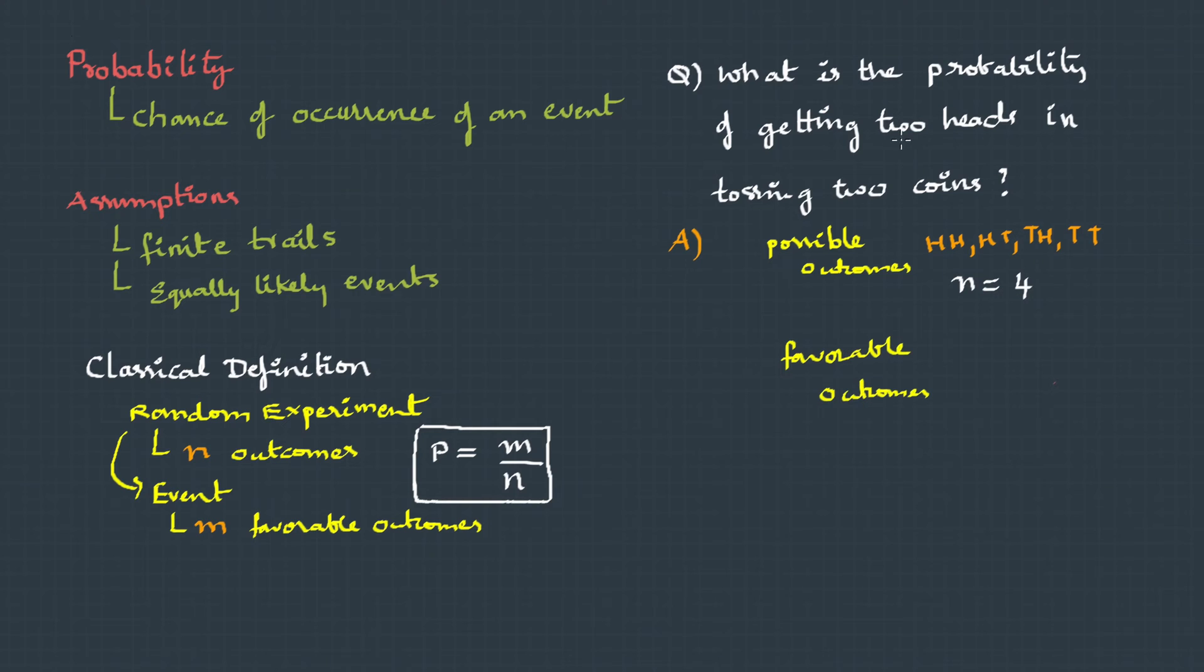And the favorable outcome is getting two heads, so m is 1. And now using the definition, we can say P is favorable outcomes by total outcomes, which is 1 by 4. That's how we calculate the probability.